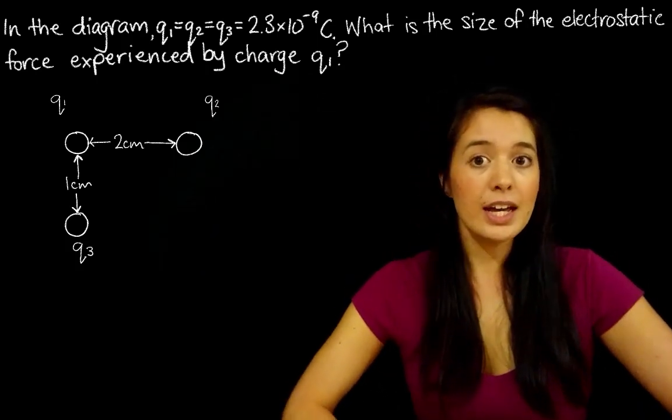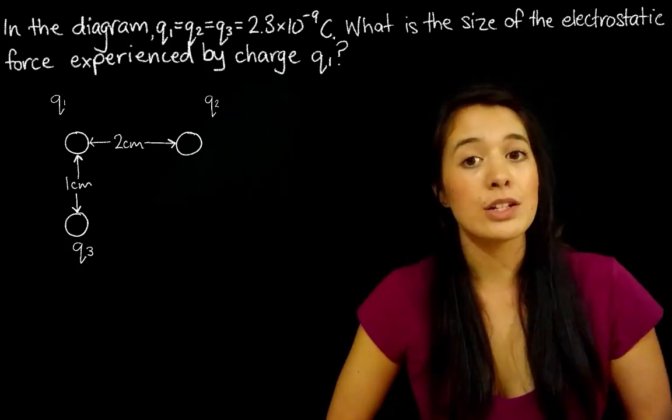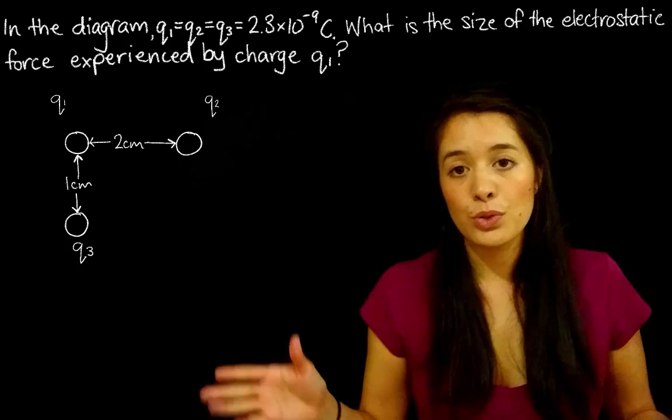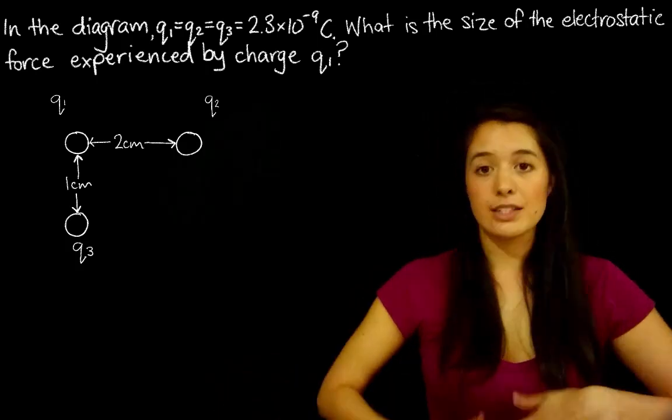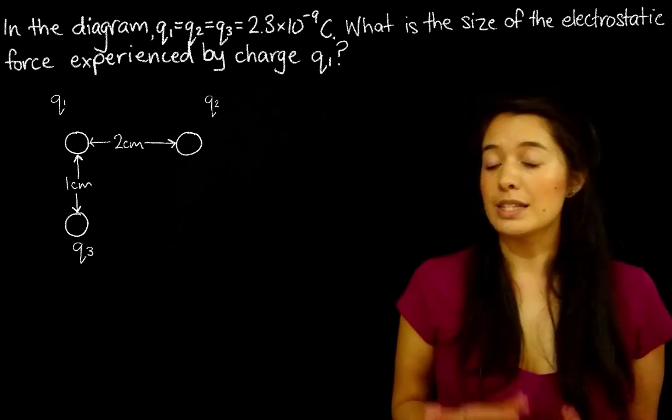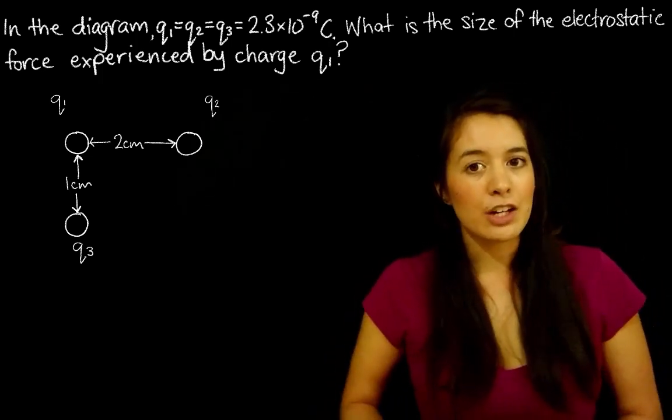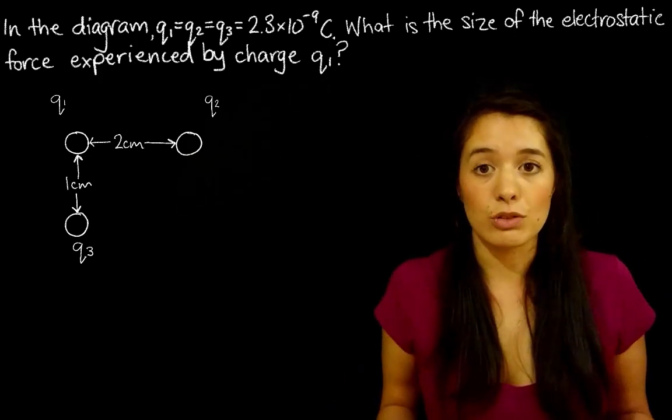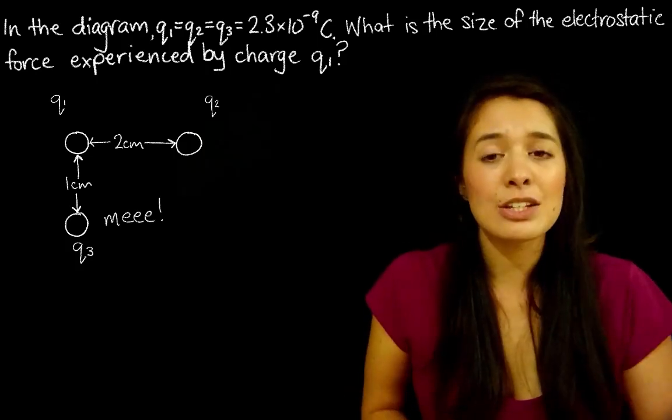Well, we have three charges of equal magnitude, Q1, Q2, and Q3. So Q1 and Q2 are separated by a distance of two centimeters and Q1 and Q3 are separated by a distance of one centimeter. So just from this, which do you think out of Q2 and Q3 are going to be having a stronger effect on Q1? Right, Q3, because it's closer.